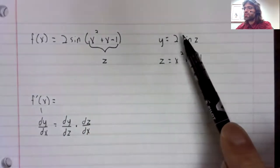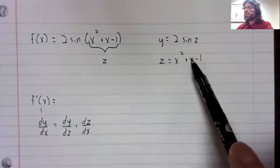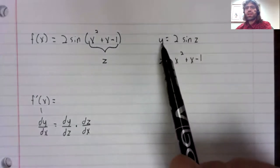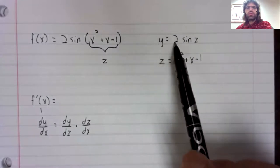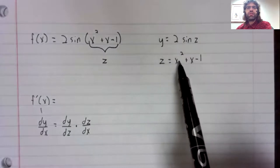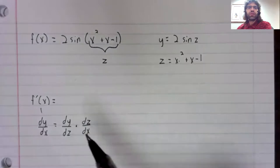Y is a function of z, z is a function of x. We want the derivative of y with respect to x. We just take this derivative and this derivative and multiply them together.